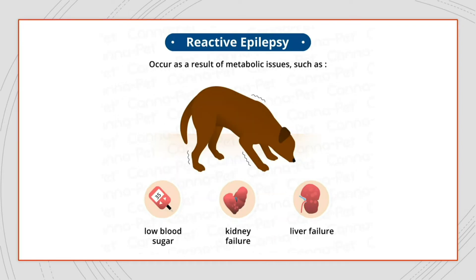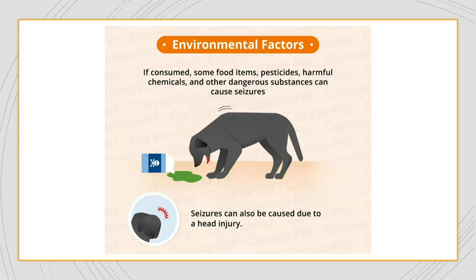Reactive epilepsy deals with metabolic issues — anything where a substance is too much or too little outside the normal range, such as low blood sugar or kidney or liver failure. There are also outside environmental factors: inside your home, certain foods or cleaning products may contain toxins harmful to dogs; outside, insecticides and pesticides can be ingested and lead to seizures, as can a physical head injury from something bumping into or falling on the dog.